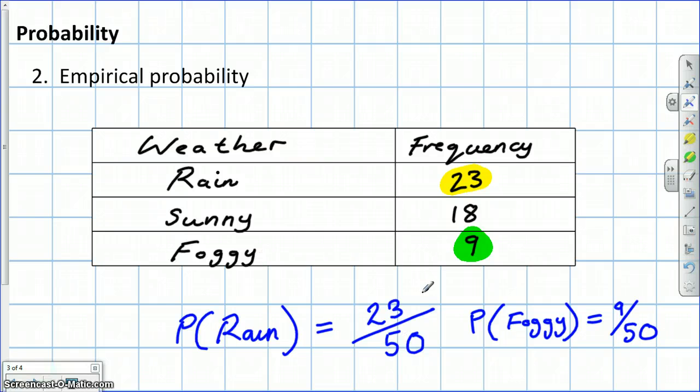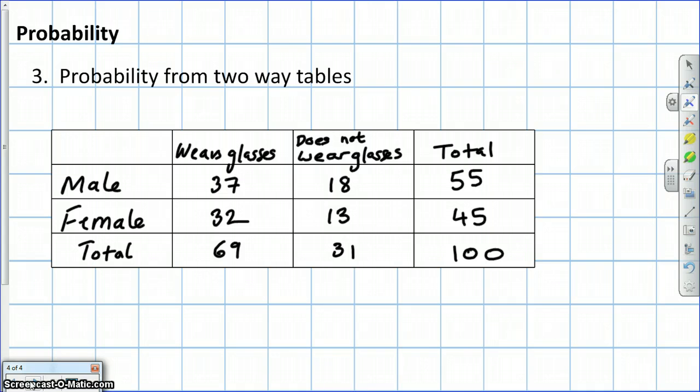So with empirical probability, we look at some experiment that's been carried out, some observation we've undertaken. And finish off now with, very similar to empirical probability, a probability from two-way tables.